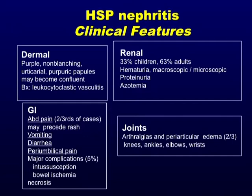There are skin abnormalities with a purple non-blanching purpuric rash, which on biopsy shows leukocytoclastic vasculitis. Regarding renal abnormalities when presenting in adults, 63% of patients in one series had some form of nephritis presenting as glomerulonephritis with hematuria, proteinuria, and abnormal kidney function. Abdominal pain is present in two-thirds of people and two-thirds of patients have joint problems. When you see a syndrome of kidney involvement with systemic findings, this is going to be a secondary form of glomerulonephritis.